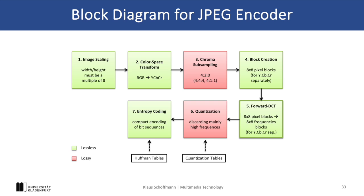In this slide you can see the block diagram of JPEG encoding which consists of seven basic steps. It starts with image scaling followed by color space transform from RGB to YCbCr. Then there is subsampling of chroma components, which discards a lot of color information and is the first true lossy part of JPEG. After that, blocks of 8x8 pixels are formed and fed into a DCT transform, which is followed by quantization and finally entropy coding. As you can see by the red color in this diagram, quantization is also the second lossy step where a lot of information is discarded.